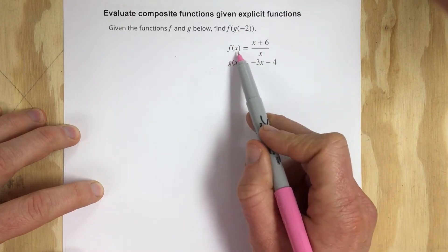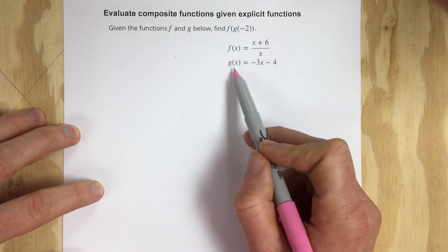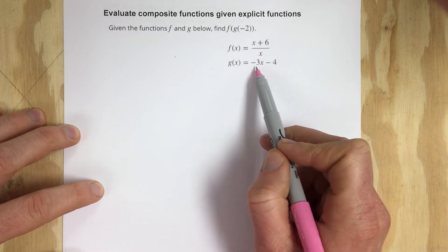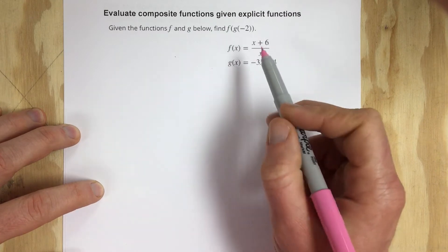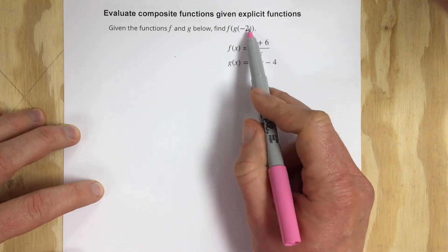The two functions f of x equals x plus 6 over 3 and g of x equals negative 3x minus 4 need to be evaluated with the negative 2.